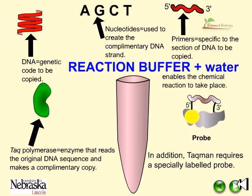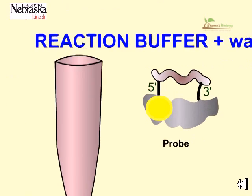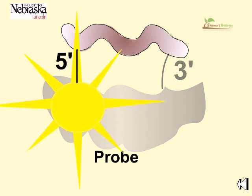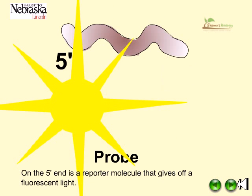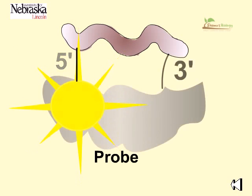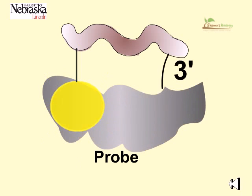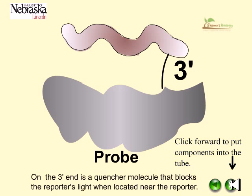In addition, TaqMan requires a specifically labeled probe: on the 5-prime end, a reporter molecule that gives off a fluorescent dye, and on the 3-prime end, a quencher molecule that blocks the reporter's light when located near to the reporter.